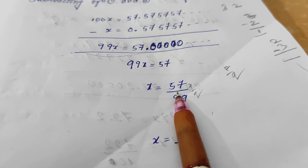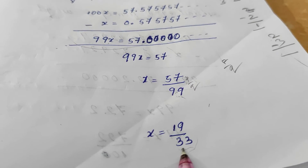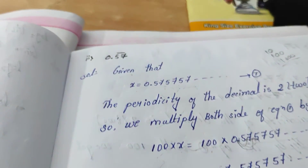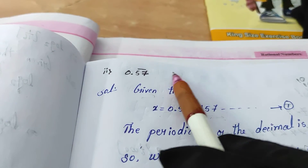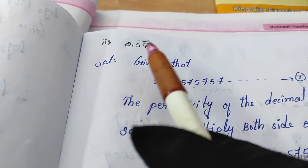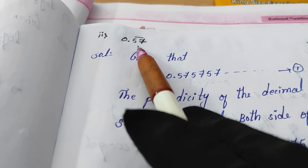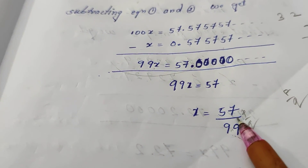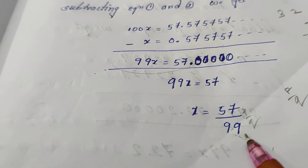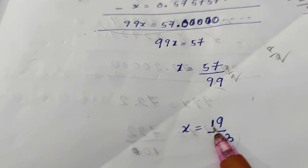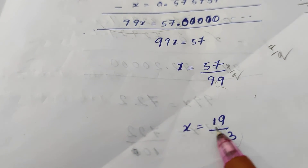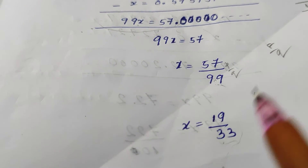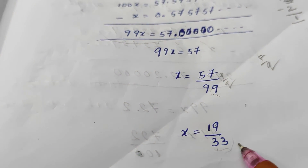Up to that you also write. In that question, what we have to do is just convert the decimal into P by Q form. We get the P by Q form. What is it? 57 by 99 is also correct. If you want to simplify, after cutting we get 19 by 33. This answer is now complete.